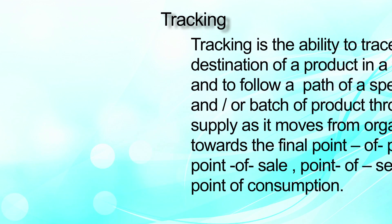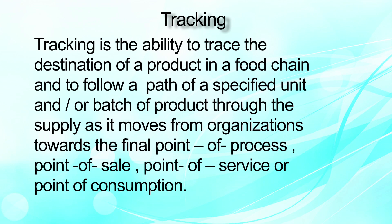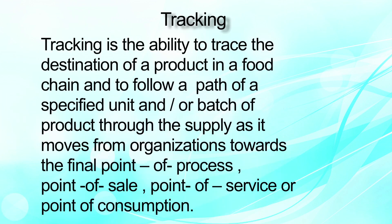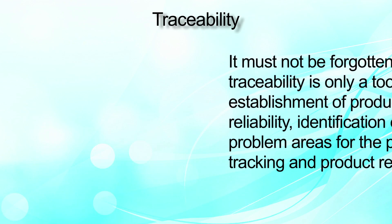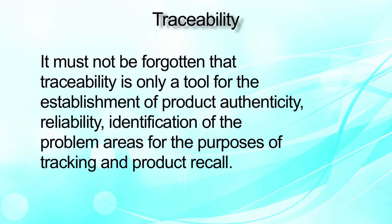When it comes to tracking, it is the ability to trace the destination of the product. Once the product is made and goes to the distributor, from distributor to the retailer — tracking is the ability to follow how this product moves from the plant to depots, to the distributor, to the retailer. So in case of recall, the product can be recalled from various destinations. Traceability is the only tool for establishing product authenticity, reliability, identification of problem areas for the purpose of tracking and product recall.